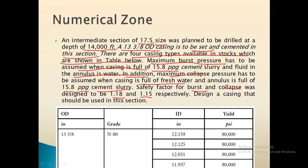We have designed an intermediate casing for this well. In the table, the outer diameter of the casing is 13 3/8 and the grade is N80, where 80 is the yield strength and N is the chemical composition used to manufacture the casing. The inner diameters given are 12.159, 12.125, 12.031, and 11.937 inches, and we have to find which inner diameter casing is suitable.